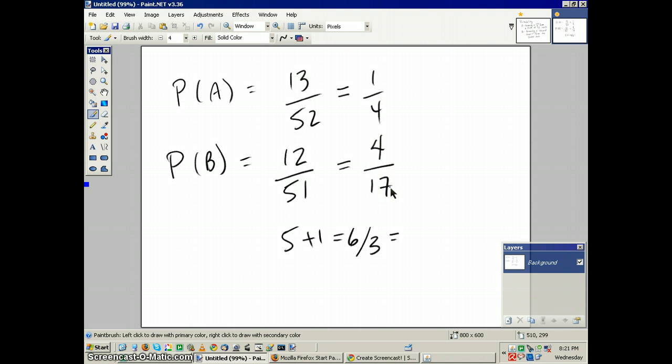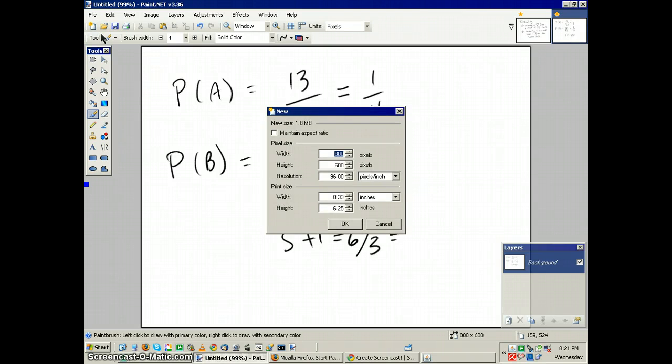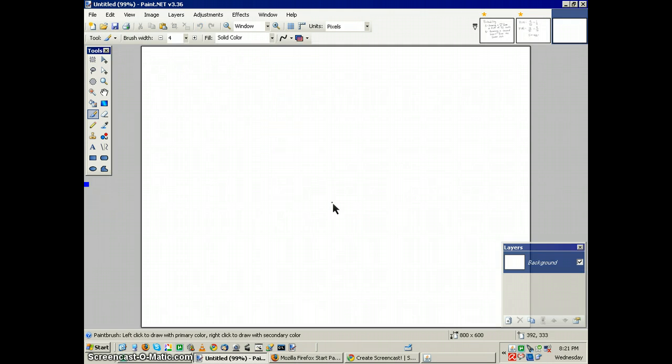Which would mean that the probability of being able to draw 2 hearts, one right after the other, is pretty simple. What we'll do is take that, and we're going to add up the probability of A and B. And that would be one-fourth times, rather, 4 over 17.